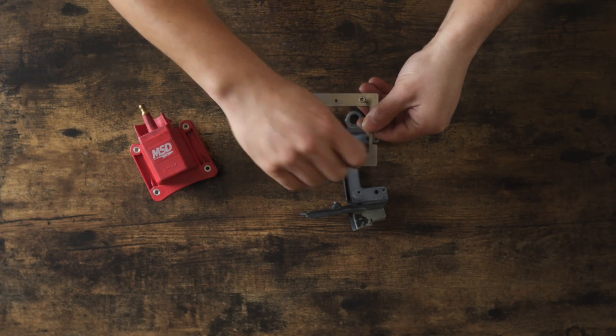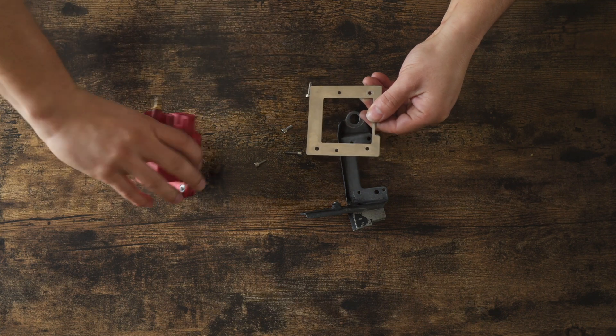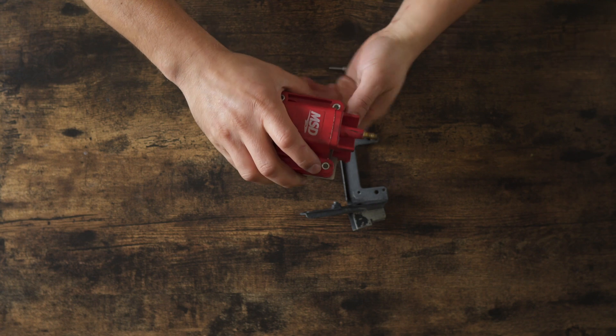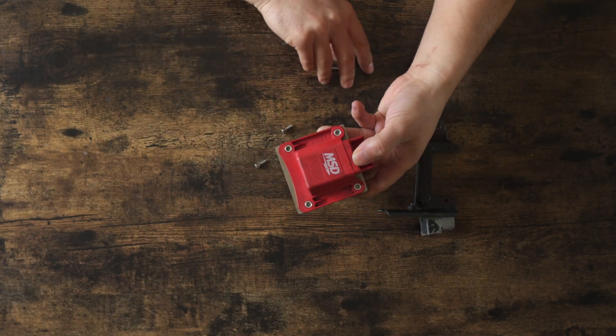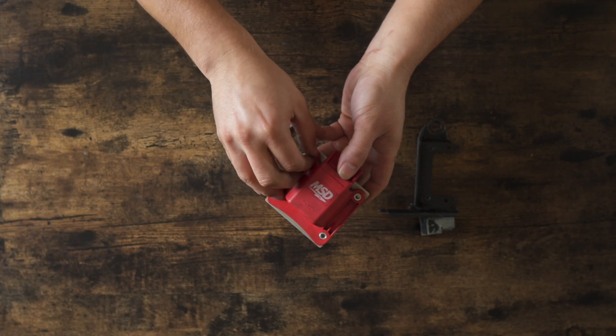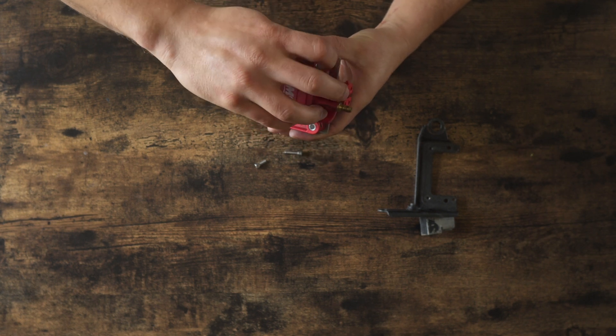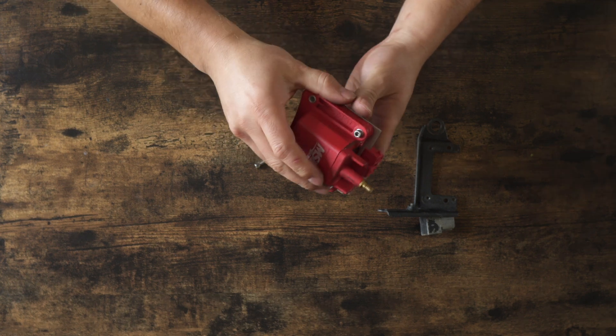But the easiest way to do this one, I feel, is to actually put the coil into the bracket first into the adapter plate. Excuse me. You're going to put the medium length bolt first into these holes.